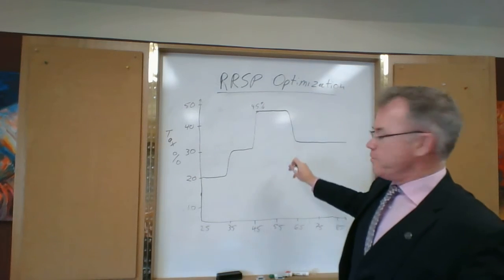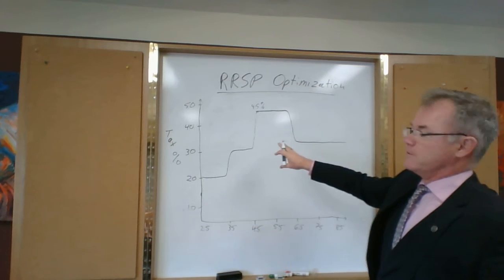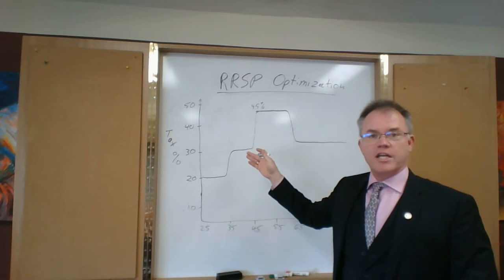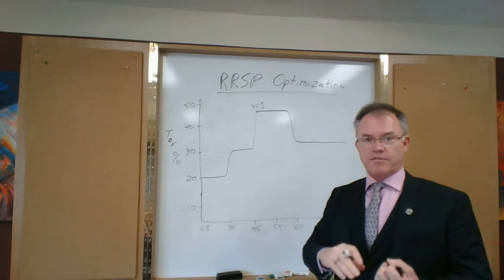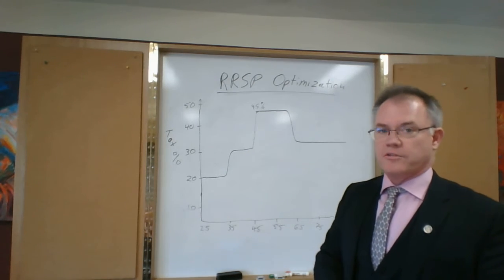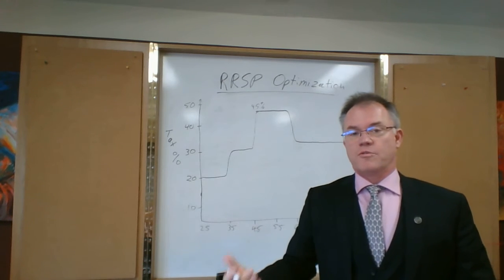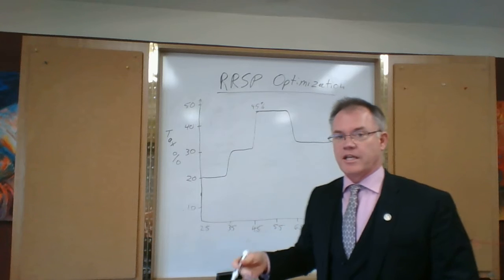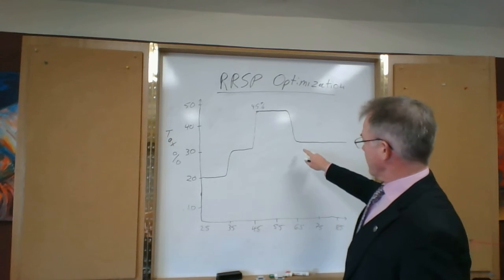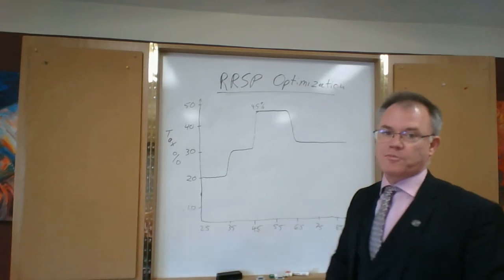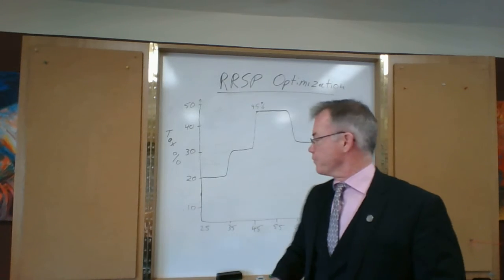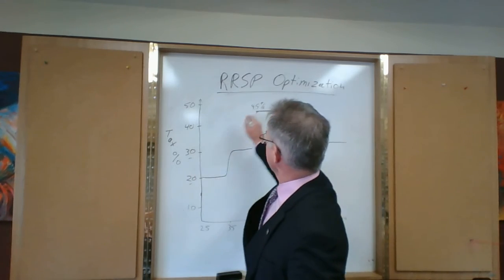And then in retirement at age 65, they lose all their sources of earning income, so they just have their Canada Pension Plan, Old Age Security, and whatever pensions that they have paid into through working years, or are drawing against their retirement savings at age 65, and go back to the 30% tax bracket. So it's 20%, 30%, and 45%.